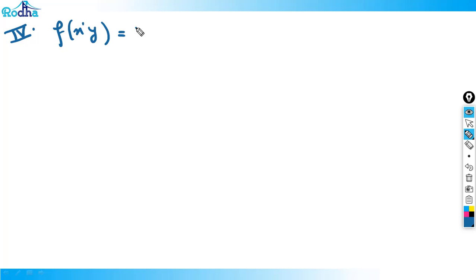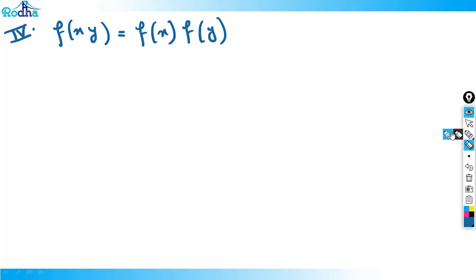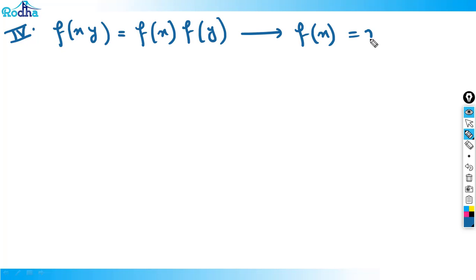The fourth function is f(xy) = f(x)·f(y). For this kind of function, the general solution is f(x) = xⁿ.